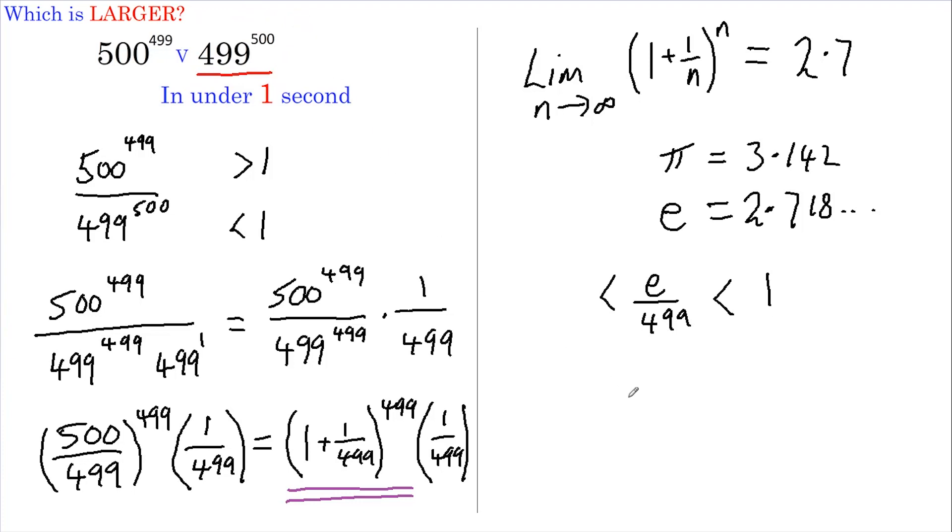So let's try some examples. What about 73 to the power of 65 versus 65 to the power of 73? Which is larger? Well, 65 and 73 are both larger than e, so this is higher because it's the highest power.